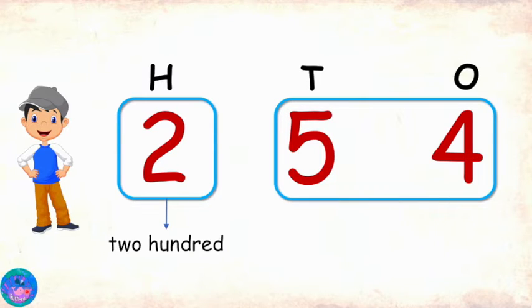Correct. So the second part is 54. While reading the two parts together, we will put the word 'and' in between. So this number will be read as 254. Aha! I think I understand.